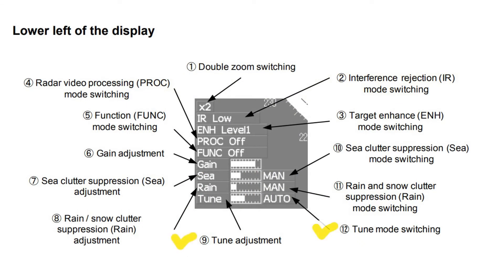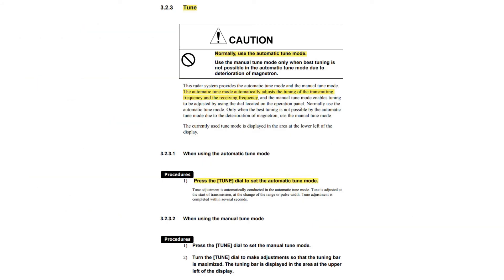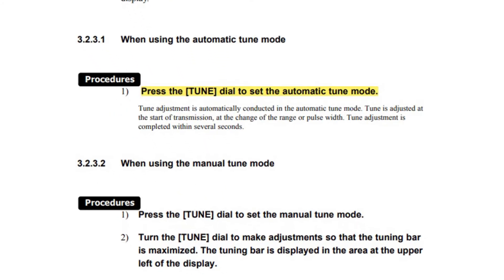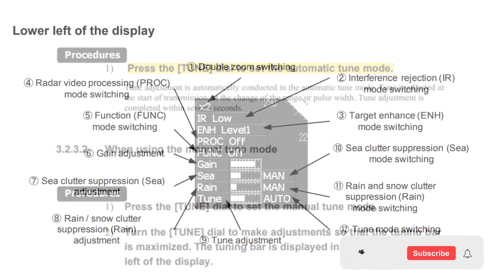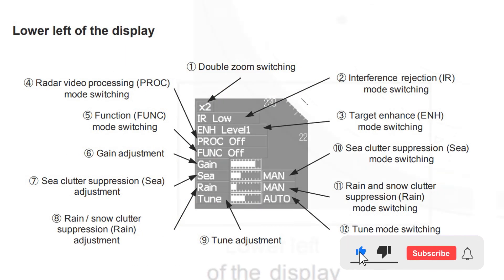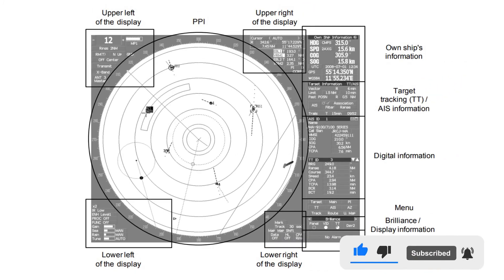Tune adjustment: this radar system provides automatic tune mode and manual tune mode. The automatic tune mode automatically adjusts the tuning of the transmitting and receiving frequencies. The manual tune mode enables tuning to be adjusted using the dial on the operation panel. Normally use the automatic tune mode. Only when the best tuning is not possible by the automatic mode due to deterioration of the magnetron, use the manual tune mode. Thank you very much for watching — subscribe to the channel and see you in the next video.